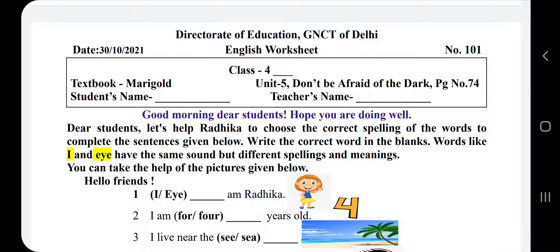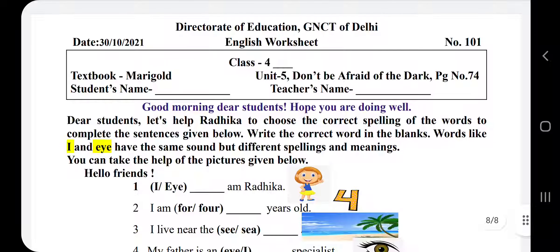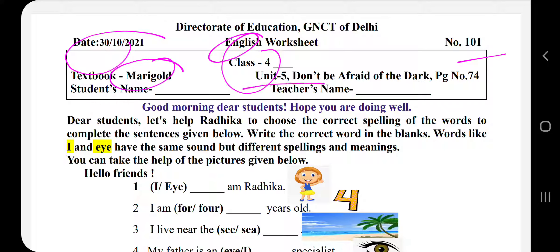Good morning dear students. Hope you all are doing well. Today I am discussing your worksheet number 101101. This is your English worksheet of class 4 and the date is 30 October 2020. This worksheet is taken from your Marigold book, unit 5 — 'Don't be afraid of the dark' poem.